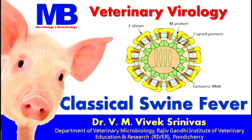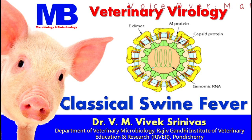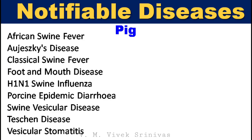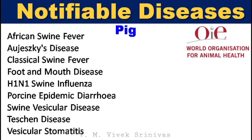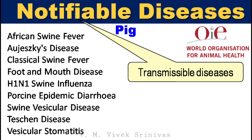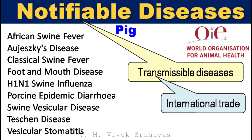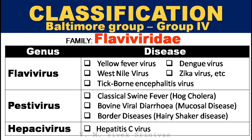In this video presentation, we will discuss classical swine fever, one of the important notifiable diseases affecting pigs. These are some of the notifiable diseases affecting pigs listed by OIE. Notifiable diseases are transmissible diseases that have serious potential for rapid spread, irrespective of national borders, and are of major importance in the international trade of animals and animal products. Classical swine fever is one of the notifiable diseases listed under this classification.